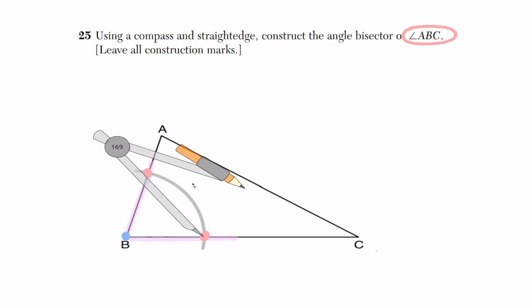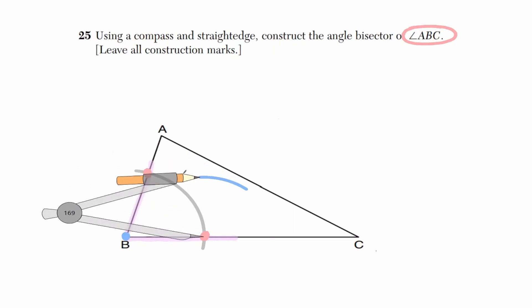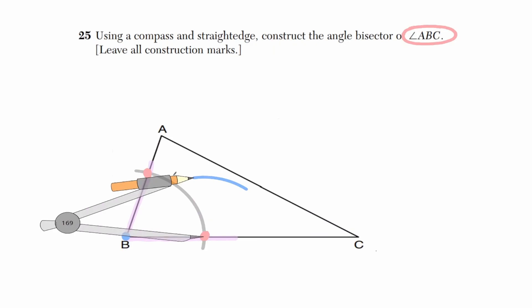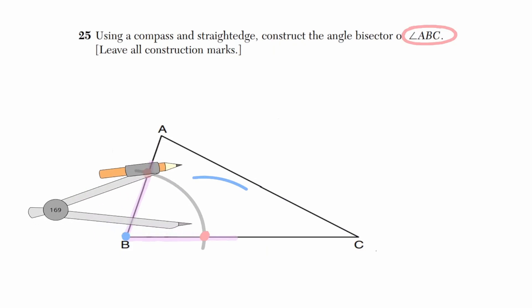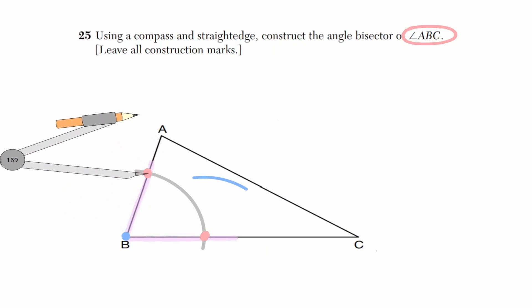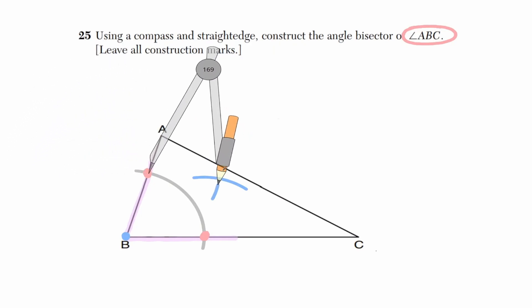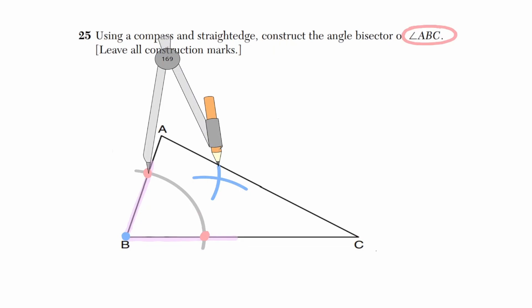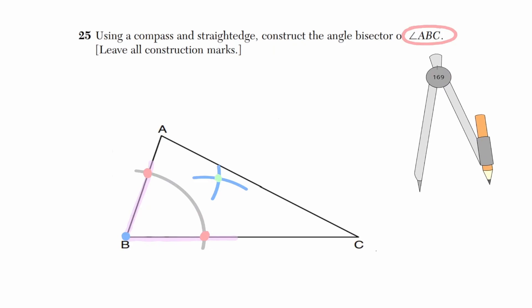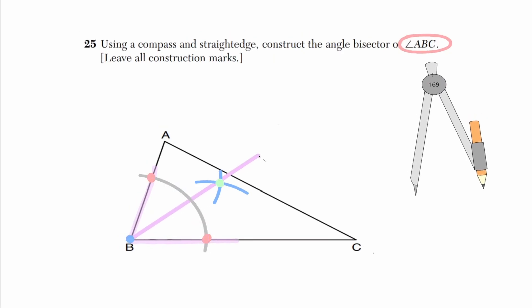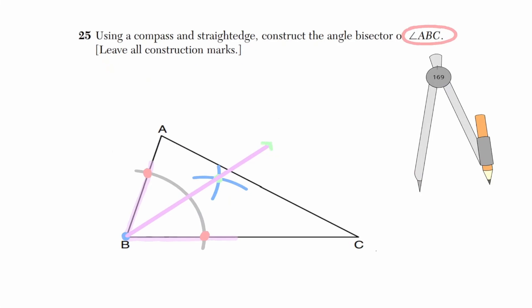I'm going to create a mark on the inside of my triangle. And I'm going to do the same without changing the distance of my compass. I'm going to move my metal leg to the other intersection. Notice that I haven't changed the length of my compass. And now I'm going to look for the intersection with the arc that I made previously. And we are done — let me move my compass to the side.